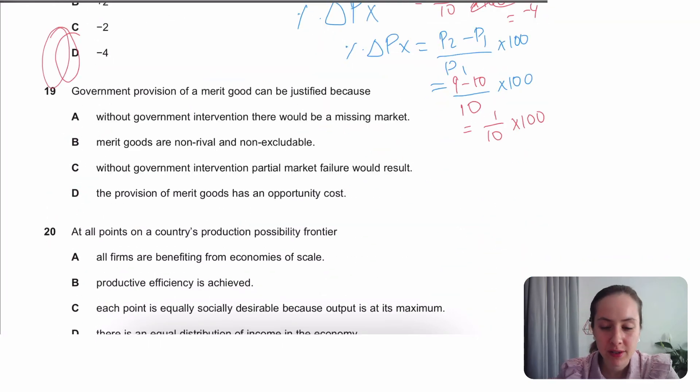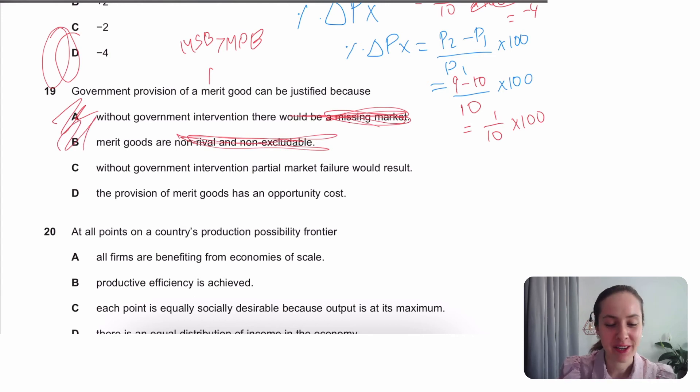Government provision of a merit good can be justified. So merit goods, these are goods that have an MSB that's higher than the MPB. And production of this will be justified because it usually adds more to the benefits of society than the costs. Let's look at this. Without government intervention, there would be a missing market. No, that's a public good. That is a public good. Don't use that one. That is still a public good. Don't use that one. Without government intervention, partial market failure would result. Yeah, you'd get some production of a merit good. So if you remember the graph, the MSB would be here. The MPB would be there. You'd get some production. Your production would be Q1. You want Q2, but that's the answer.